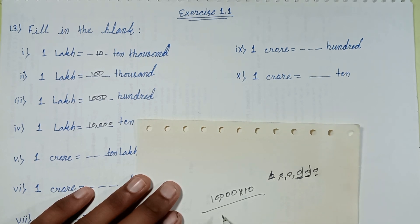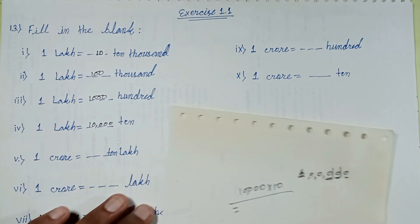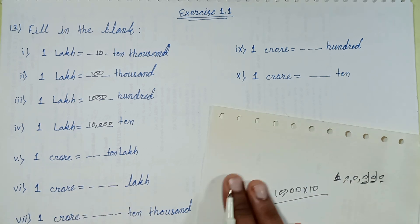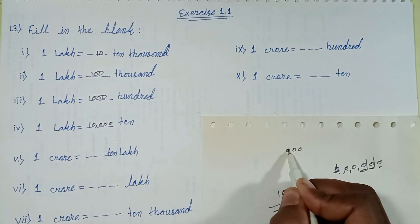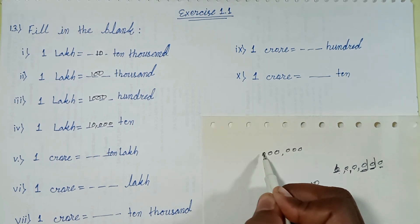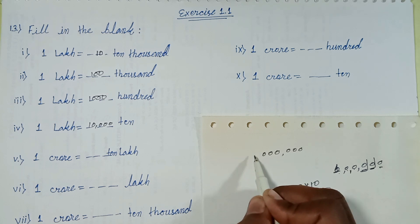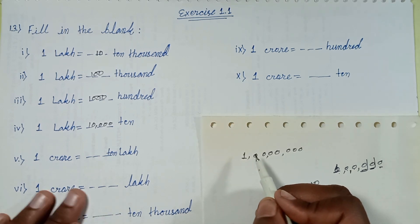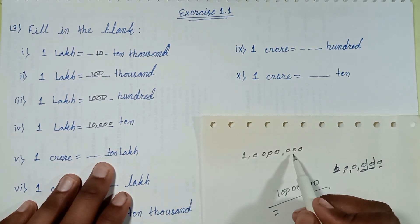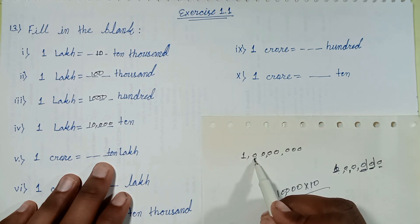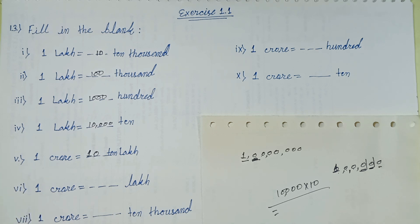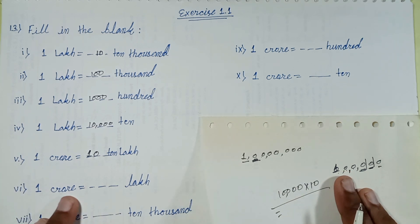How many ten lakhs are in one crore? Ones, tens, hundreds, thousands, ten thousands, lakh, ten lakh, crore. How many ten lakhs? With this digit: one zero, one zero — ten, ten thousand, ten, ten lakh equals one crore.